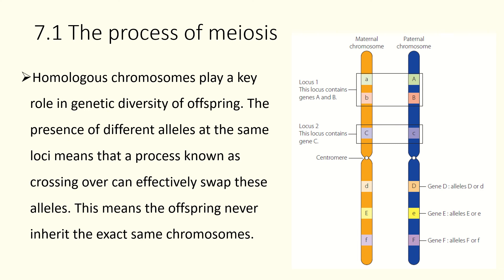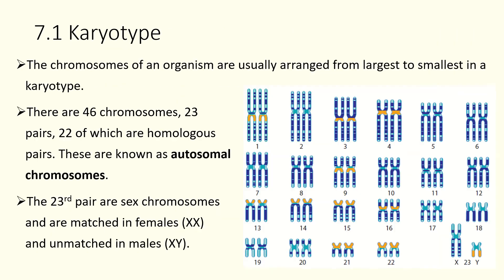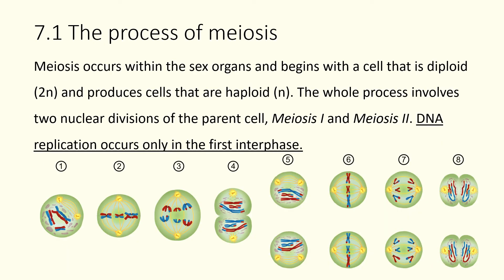Homologous chromosomes play a really important role in genetic diversity of offspring, because the presence of different alleles means you are genetically different to your parents. That has also been changed through processes like crossing over, which we'll cover after going through the basics of meiosis. Effectively, our offspring will never inherit the exact same chromosomes as their parents from these homologous chromosomes. In terms of karyotype — we have 46 chromosomes, 23 pairs: 22 autosomal chromosomes and then our 23rd pair are our sex chromosomes. Autosomal — similar root word to somatic — just means non-sex related.